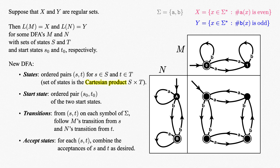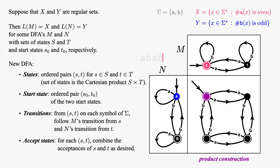This whole process, due to the Cartesian product of the sets of states it employs, is called the product construction. Note that the word 'product' here refers to the Cartesian product and has nothing to do with string concatenation. This construction allows us to combine two DFAs so they effectively run simultaneously on any given string, combining the results of the two machines logically in any way we choose. This process can be performed for any two given DFAs, so it's the tool that allows us to conclude that the union or intersection of two regular sets is regular.